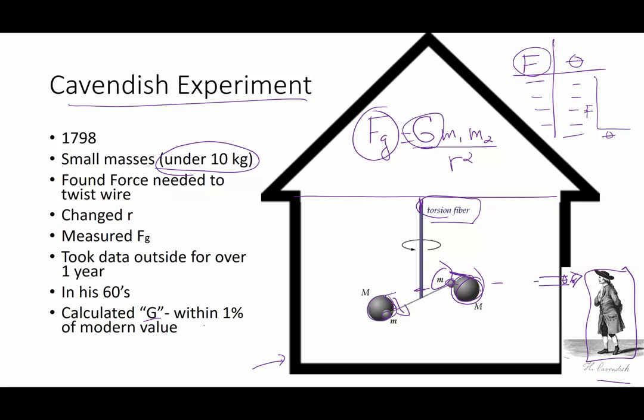The value he got for the universal gravitation constant is so good that it is within 1% of the modern value of that number. Considering that this was over 200 years ago, it's a very impressive science.